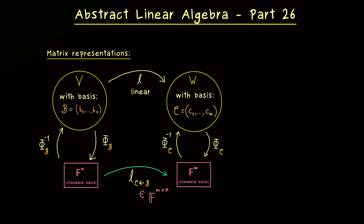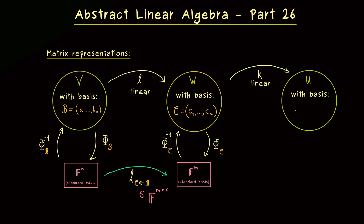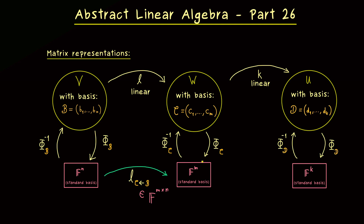By definition we know this is an m×n matrix. Now we want to extend this picture, because we want to talk about the composition of linear maps, so we have to add a second one. Let's say this is our linear map K from the vector space W to the vector space U, and moreover let's say we choose a basis D there — D₁, D₂, until we reach Dₖ. So we have dimension n here, dimension m there, and in the end dimension k. We can do the same translations as before and get a matrix representation for K as well, and the correct name would be K with index where C goes in and D comes out.